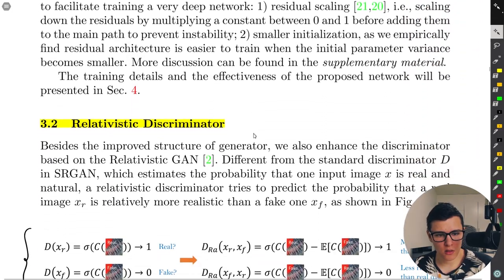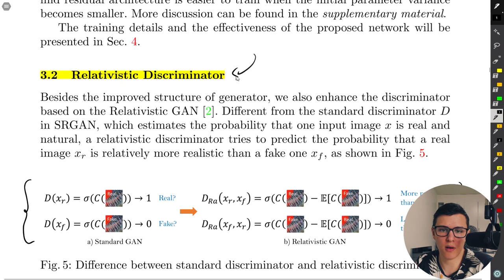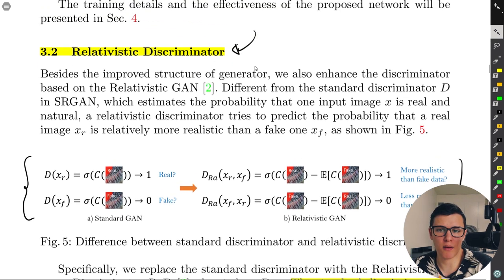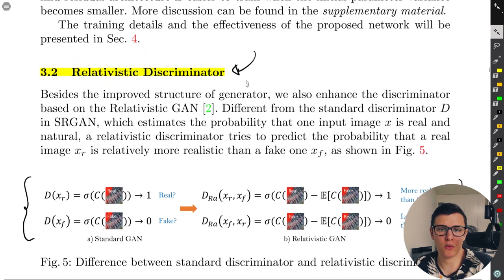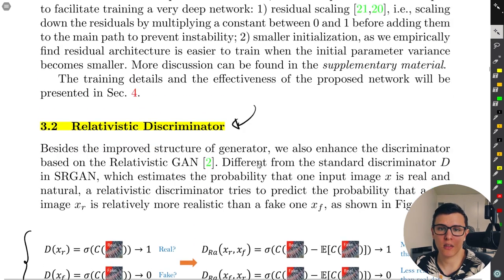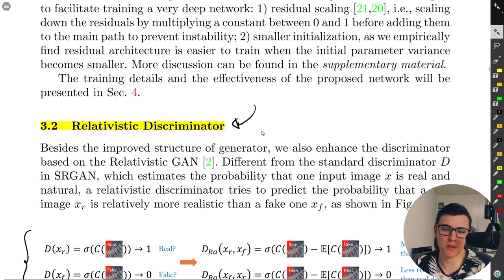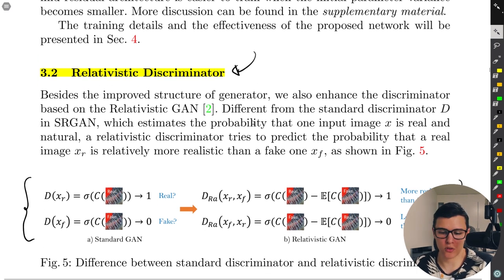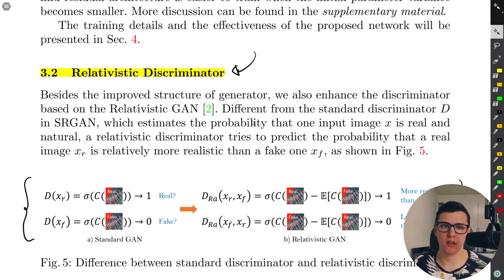The other key part is the Relativistic Discriminator. I haven't seen this much in other papers — it's kind of the first time I've seen it. I'm not sure how important it is; using WGAN-GP would probably give similar results. Their implementation did also have a WGAN-GP option, and they mentioned it just took longer without significant improvement, and didn't do anything worse.